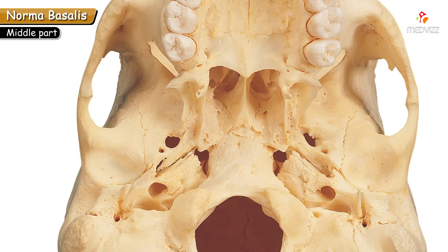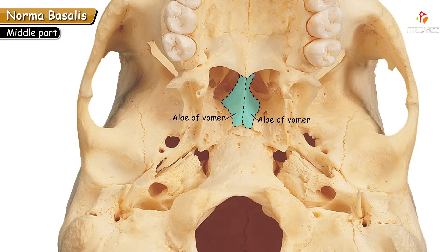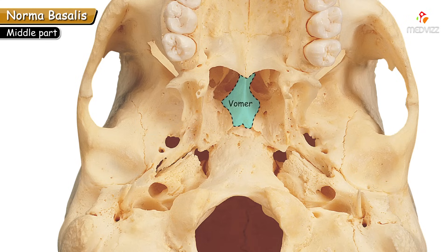The posterior nasal apertures are separated by a bony partition — the vomer — a thin plate-like bone which makes the major part of the nasal septum. The vomer splits into two thin bony plates known as the alae of the vomer. These alae articulate with the anterior end of the sphenoid, which is the rostrum of the sphenoid. Posterior to the vomer we can see a wedge-shaped bony bar.